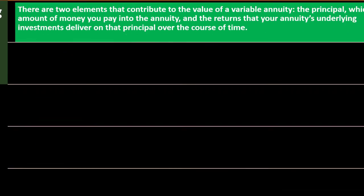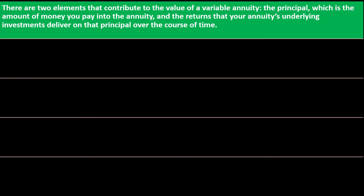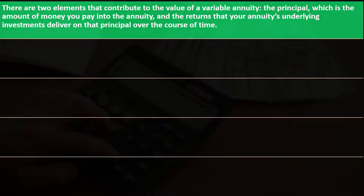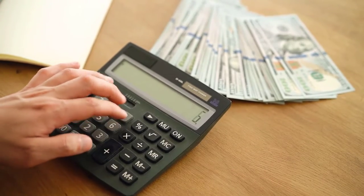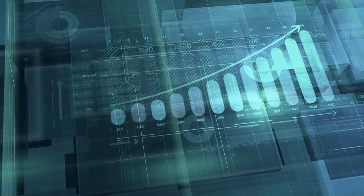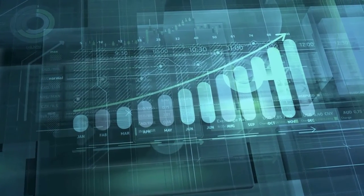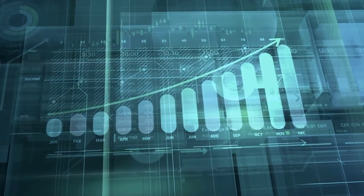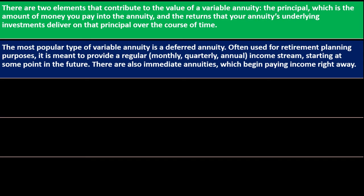There are two elements that contribute to the value of a variable annuity: the principal, which is the amount of money you pay in, and the returns that the annuity's underlying investment delivers on that principal over time. The most popular type of variable annuity is a deferred annuity, often used for retirement planning. It is meant to provide a regular monthly, quarterly, or annual income stream starting at some point in the future.